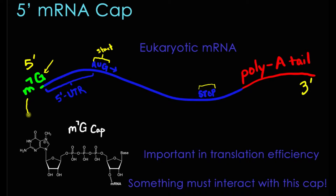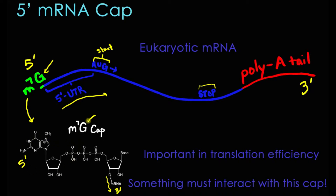So this M7G CAP is what we're really interested in. Here's a molecular view of what that looks like. You can see down in the bottom right, this says mRNA — that's the rest of the gene, translating this way. So 5' is up here, 3' is down here. The very penultimate nucleotide has three phosphates linked onto it and then a sort of backwards guanine — a backwards G nucleotide, as is evidenced by the G in the M7G name.